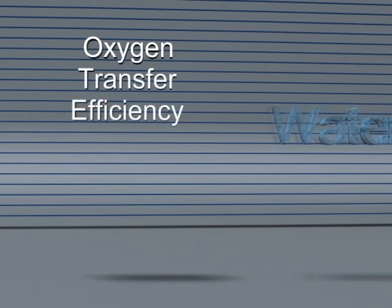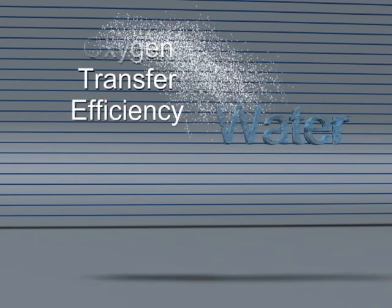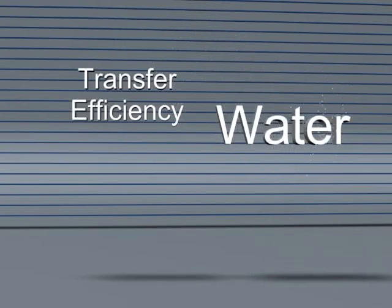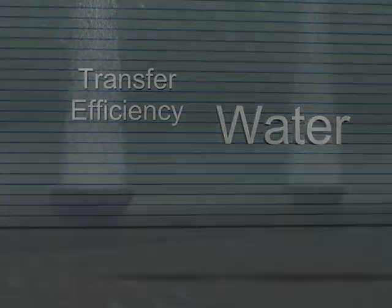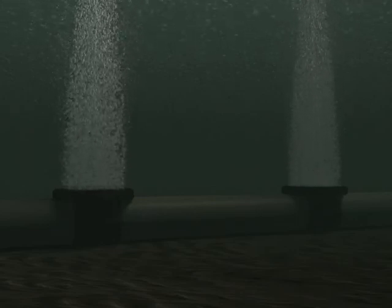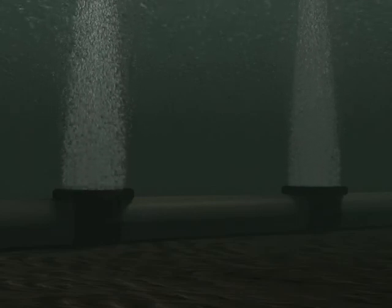Oxygen Transfer Efficiency refers to the efficiency of a system to transfer oxygen into the water. Oxygen is transferred from the surface of the bubble into the water as it rises through the water. Experimental results with conventional systems have shown that the minimum bubble sizes generated are greater than 3 to 4 millimeters in diameter.